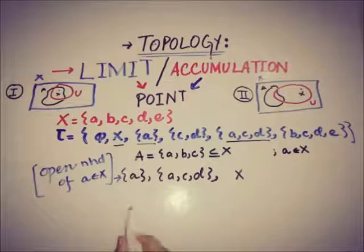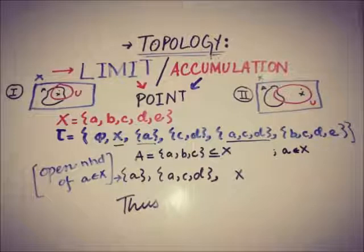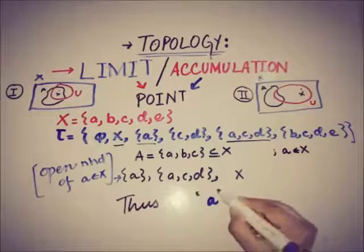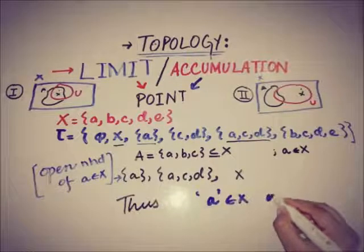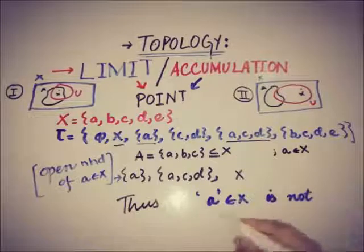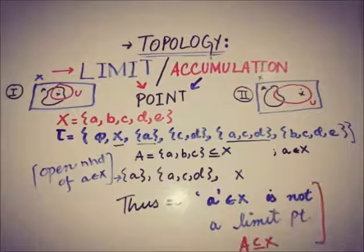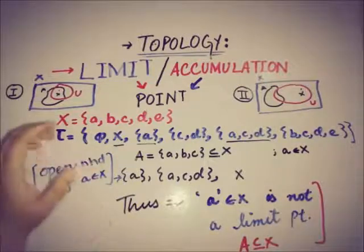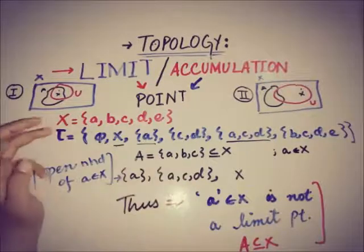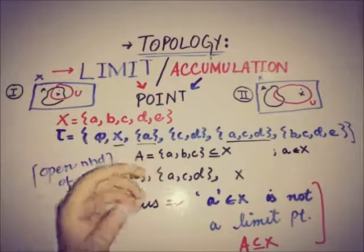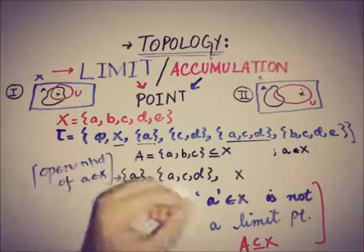Thus, 'a' — as a point in X — is not a limit or accumulation point of A = {a, b, c}. You can also pick any random subset of X and any random point from X in order to check for limit or accumulation points.